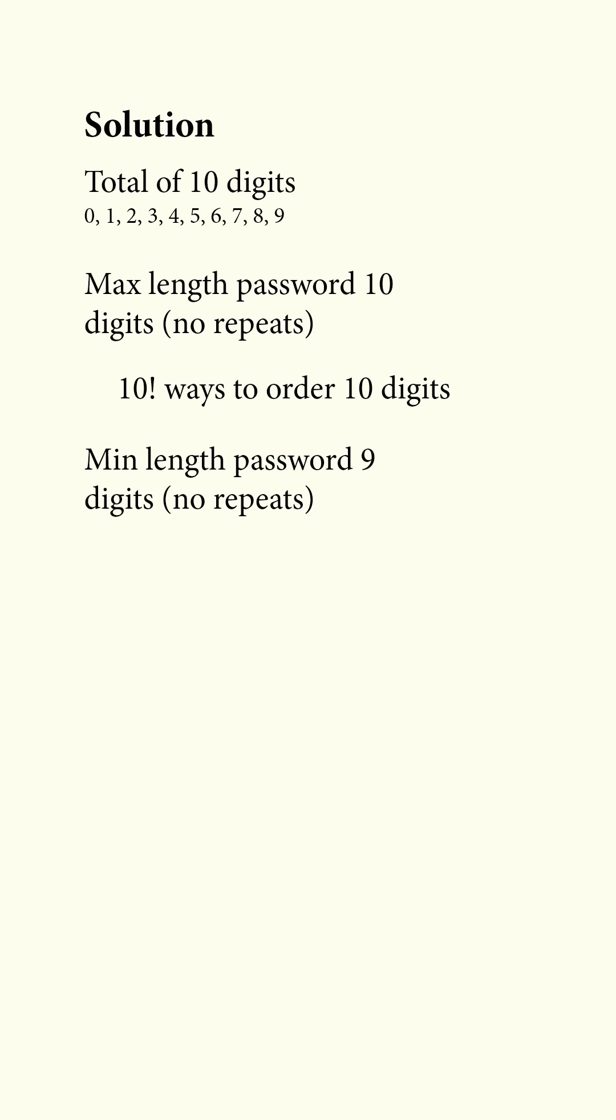So first we want to know the number of ways to choose 9 digits from 10 digits. That is 10C9, which is equal to 10. Then we can arrange these 9 digits in 9 factorial ways. Multiplying these together gives 10 multiplied by 9 factorial, which is equal to 10 factorial.